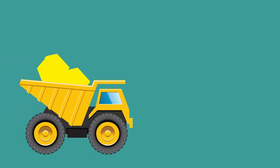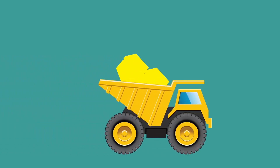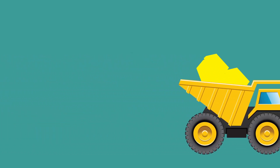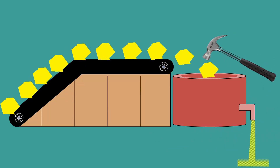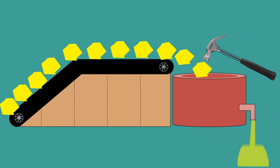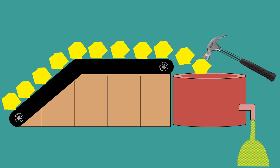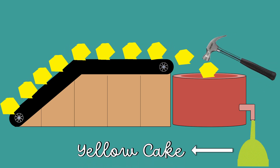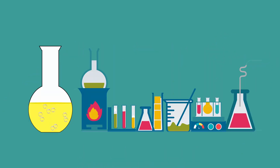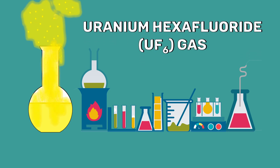The mine ore which consists of uranium is crushed and chemically treated to extract uranium. The result of this process is a uranium concentrate powder known as yellow cake. This yellow cake again undergoes many chemical reactions to form uranium hexafluoride gas.